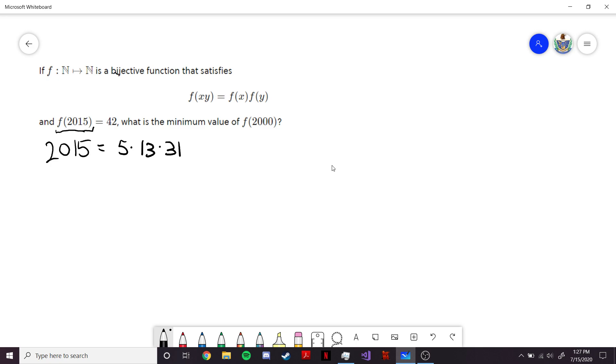So f(2015), we can use this rule repeatedly to break down f(2015), which is 42. We could say 42 is f(5) times f(13) times f(31).